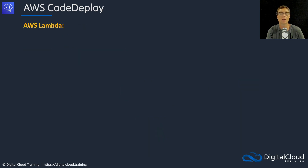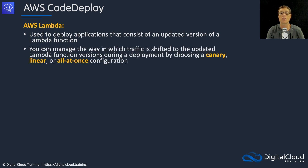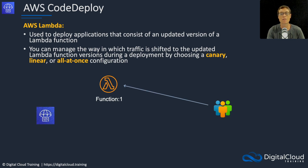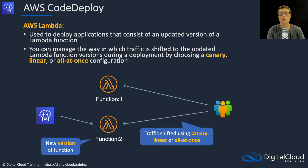Next, we have the AWS Lambda deployment type. This is used to deploy applications that consist of an updated version of a Lambda function. You can manage the way traffic is shifted to the new version by choosing either a canary, linear, or all-at-once configuration. CodeDeploy deploys function version two, then traffic is shifted across to it using either canary, linear, or all-at-once — which I'll cover in a moment.